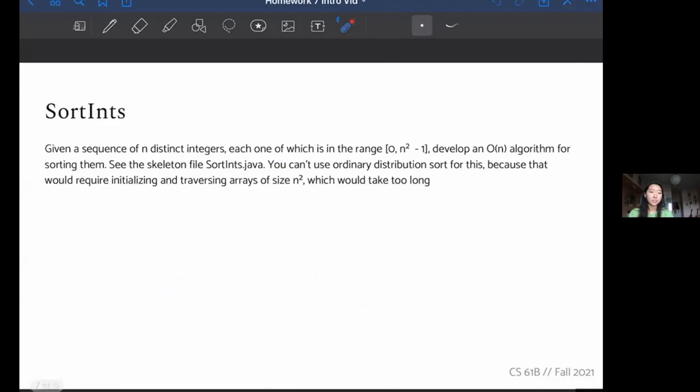The next one is SortInts. This one says, given a sequence of n distinct integers where each one of them is in the range from 0 to n squared minus 1, develop a linear time algorithm for sorting them. For this, I would really just recommend looking at the skeleton file given SortInts.java. What's interesting about this is that you can't use ordinary distribution sort for this because that would require initializing and traversing arrays of size n squared, which would take too long. So this is sort of a puzzle, a little challenge, a trick, and it's going to require some creative thinking for solving this.